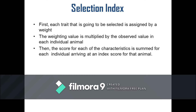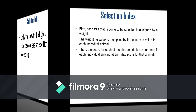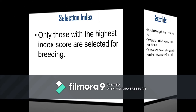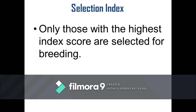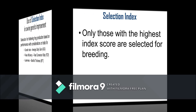The score for each of the characteristics is summed for each individual, arriving at an index score for that animal. Then selection is done such that only those with the highest index score are selected for breeding and the rest are culled and removed from the breeding program.